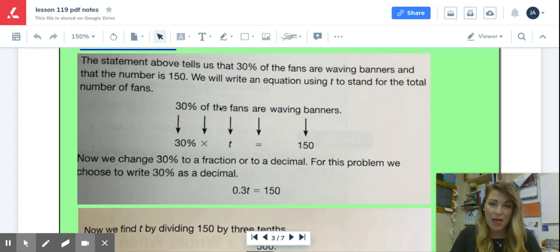So look at how they've broken this down and used that wording to create an equation. 30 percent remains 30 percent right here. Of in math means times. 30 percent of the fans, total fans, there's that t, are. The word are or is, that stands for equals waving banners.